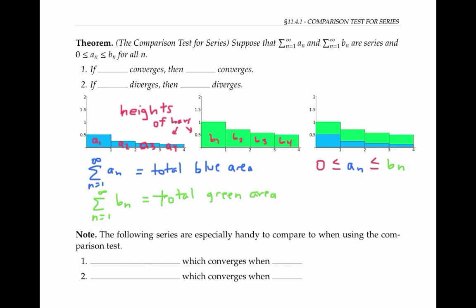Because the blue bars have a smaller area than the green bars, we can make some conclusions. First of all, if the total green area is finite, then so is the total blue area. In other words, if the sum of the b sub n's converges, then so does the sum of the a sub n's.